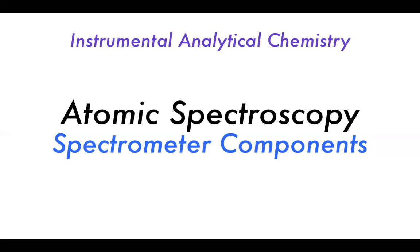Welcome to the second part on atomic spectroscopy, where we will be encountering spectrometer components, especially those for ICP-MS and AAS, and some of the light sources used in atomic spectroscopy. These are some of the most fundamental analytical chemistry techniques, and so they are really important in quantitative, instrumental, and analytical chemistry.